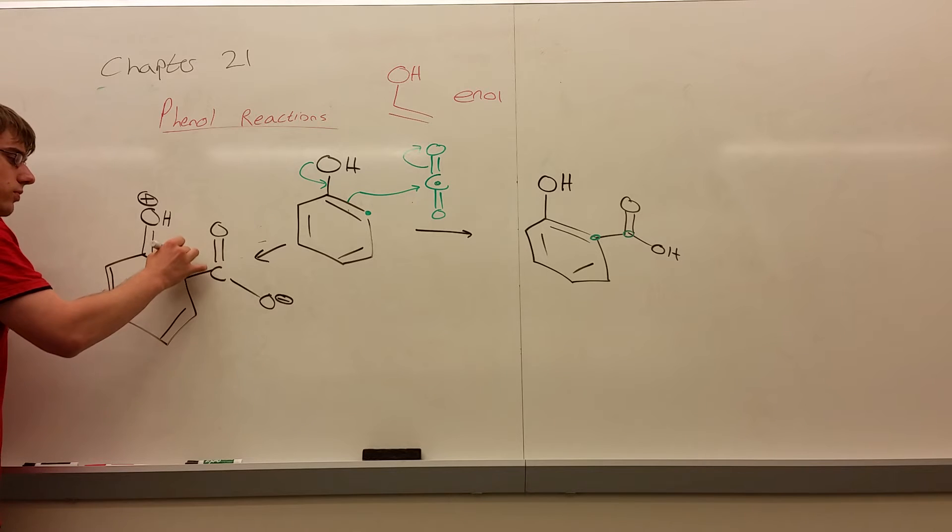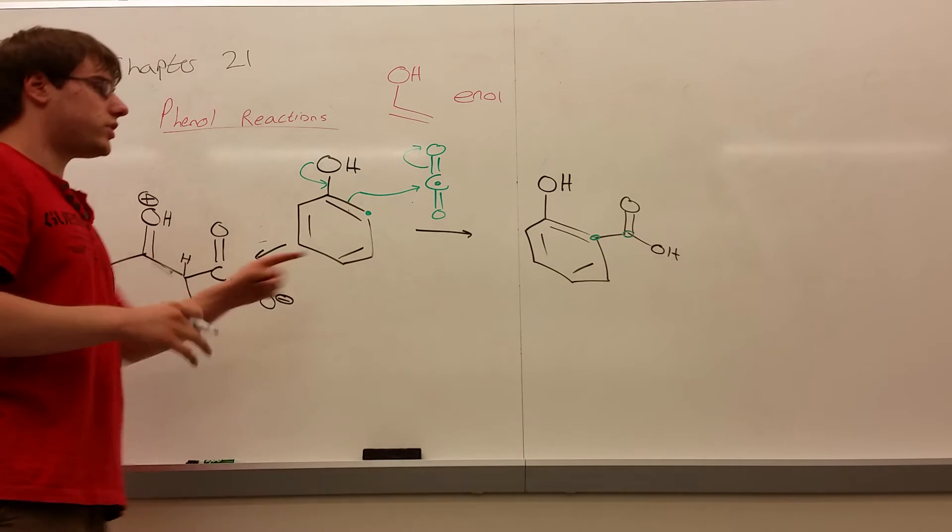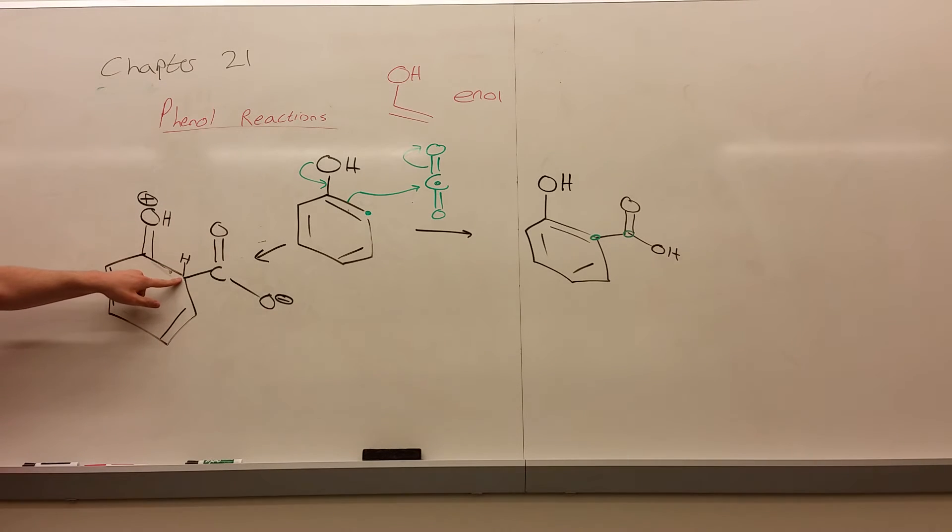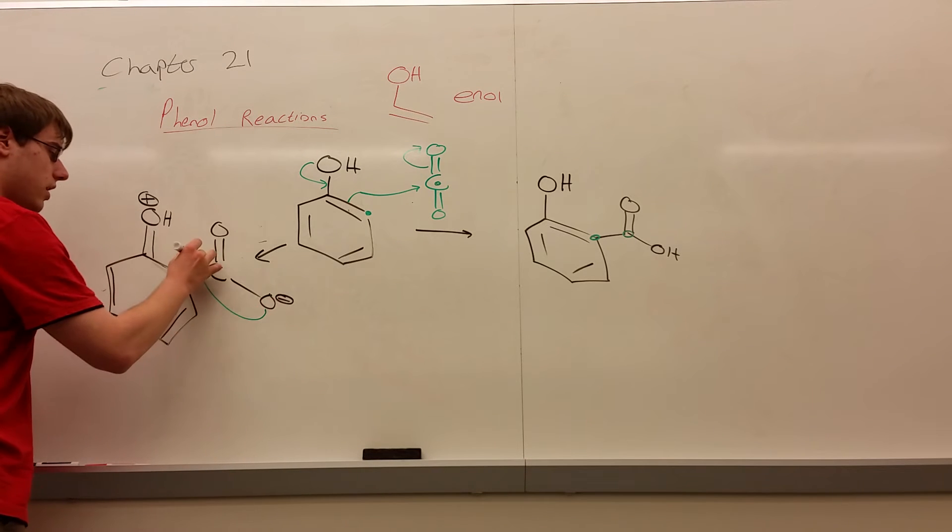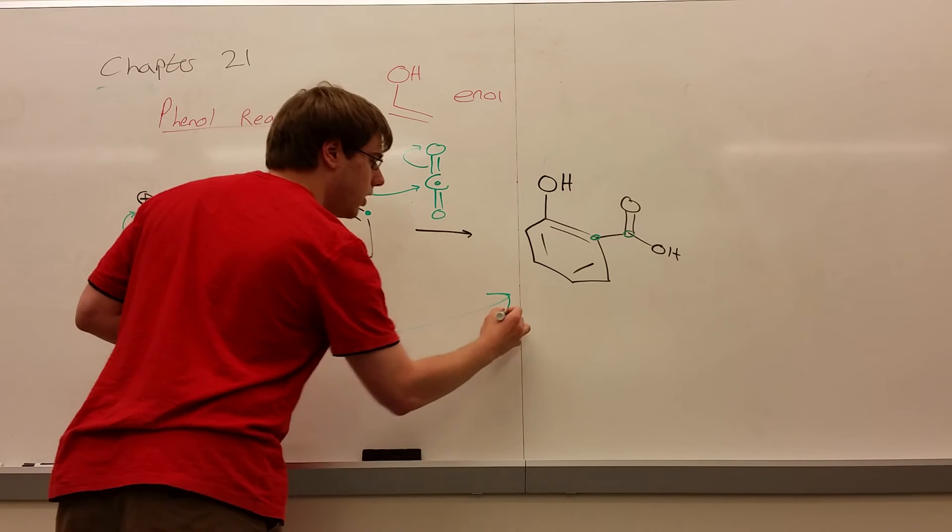But if we look at the difference in hydrogen count, this carbon has zero hydrogens, this carbon has one. Pull off that hydrogen instead of this one. So the oxygen will come in, grab that hydrogen, the electrons swing down, and this swings up to the oxygen. And those three arrows will get you to what you wanted.